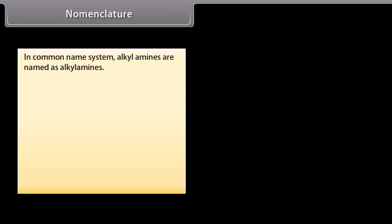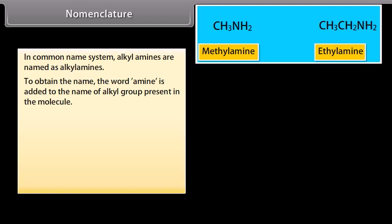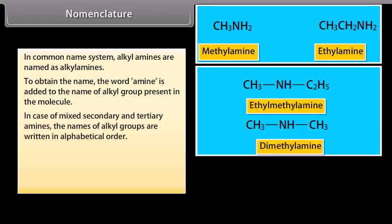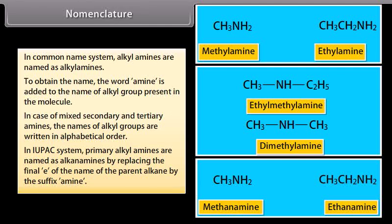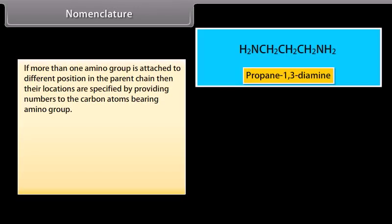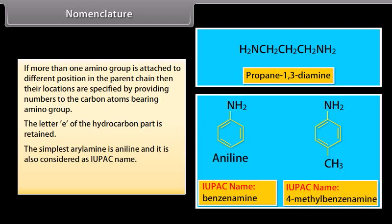In the common name system, alkylamines are named as alkylamines by adding the word 'amine' to the name of the alkyl group present in the molecule. In case of mixed secondary and tertiary amines, the names of alkyl groups are written in alphabetical order. In IUPAC system, primary alkylamines are named as alkanamines by replacing the final 'e' of the parent alkane with the suffix 'amine'. If more than one amino group is attached at different positions, their locations are specified by numbering the carbon atoms. The simplest arylamine is aniline, also considered its IUPAC name.